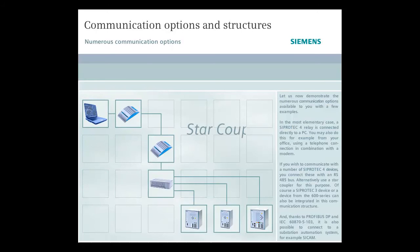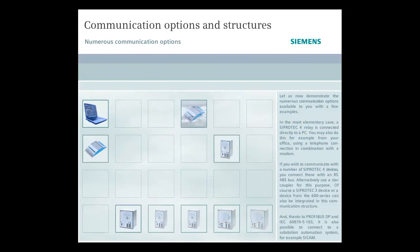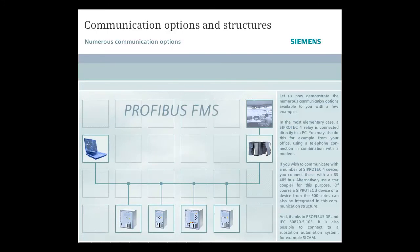Alternatively, use a star coupler for this purpose. Of course, a C-Protect 3 device or a device from the 600 series can also be integrated in this communication structure. And thanks to Profibus DP and IEC-6870-5-103, it's also possible to connect a substation automation system, for example, C-CAM.